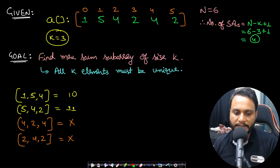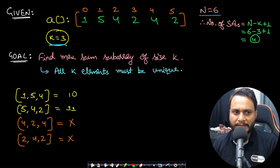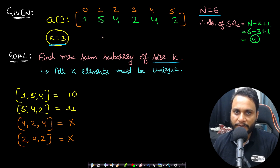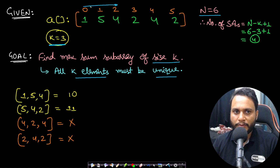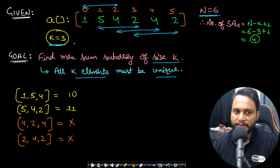Let's look at an example. We have an array of 6 items — 1, 5, 4, 2, 4, 2 — and the k value is 3, so the subarray size will be 3. Our goal is to find the maximum sum subarray of size k where all k elements must be unique. There will be 4 possible subarrays. In general, the number of subarrays is n minus k plus 1.